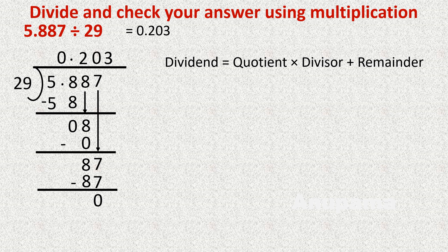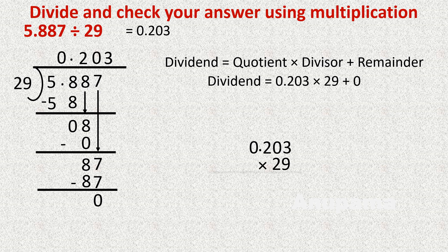We check using the division algorithm: quotient multiplied by divisor plus remainder. That is 0.203 multiplied by 29 plus 0. We multiply 0.203 by 29. First we multiply by 9: 9 threes are 27.